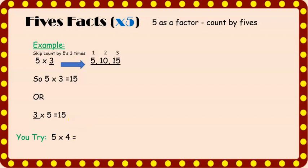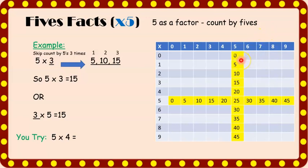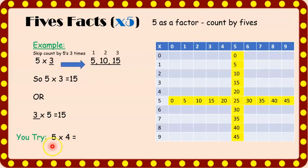Let's see if we can notice some patterns in our multiplication chart. If you look closely, you might notice that each number in the ones place ends with either a five or a zero. Now it's your turn to try — here's a problem: five times two. With the fives strategy, you skip count by five based on the other factor. If you said twenty, you're correct.